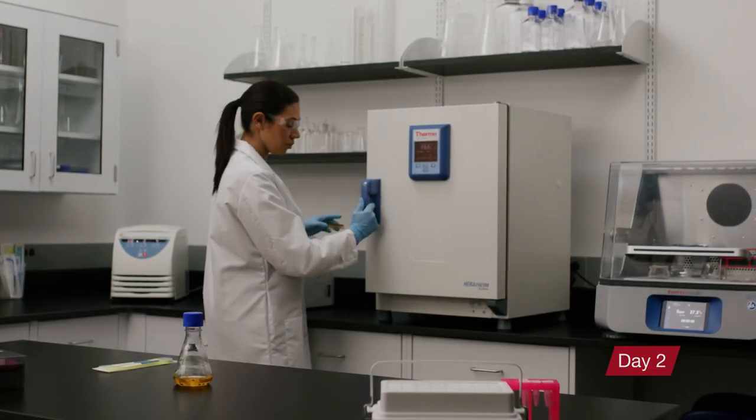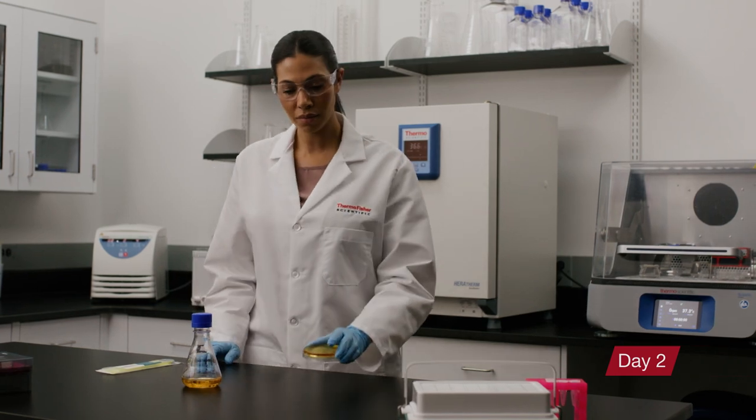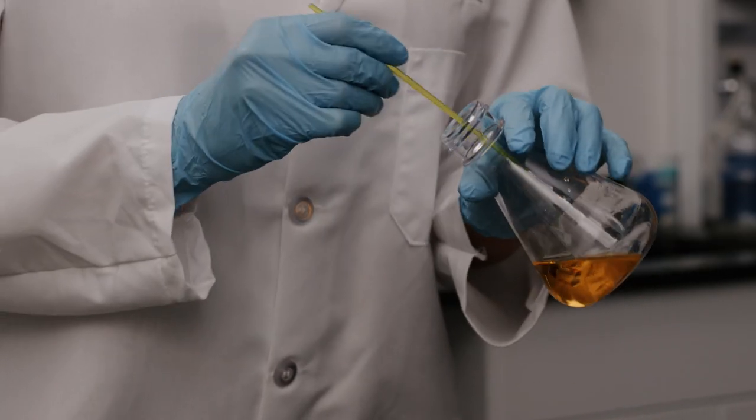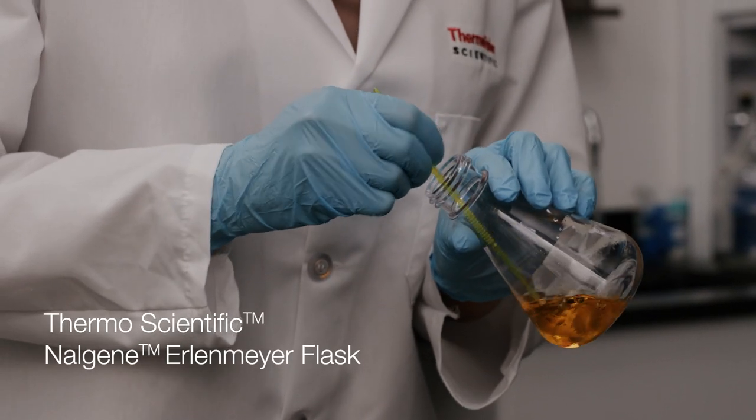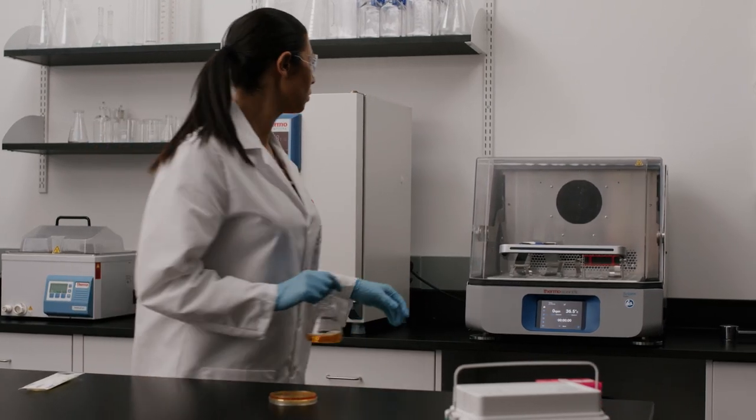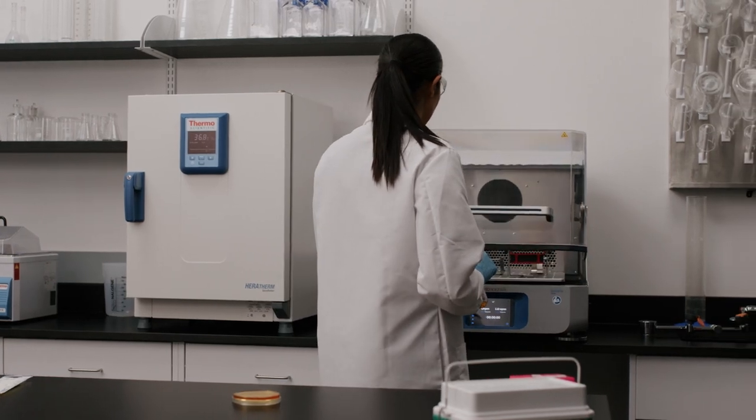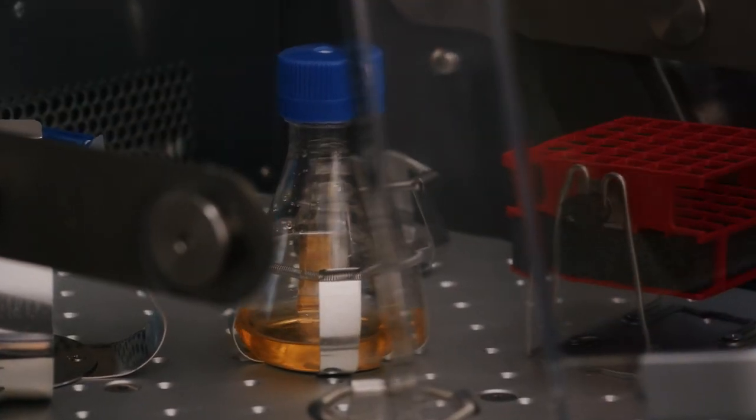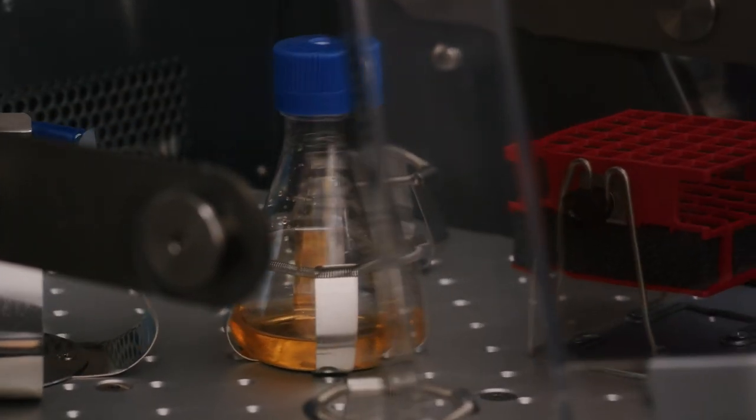The next morning, Maria removes the plate and picks a colony. She puts that colony into more media in a ThermoScientific Nalgene Erlenmeyer flask. Next, she places that flask into the same benchtop shaker she used yesterday. This time, it's set for 37 degrees Celsius for 18 to 24 hours.